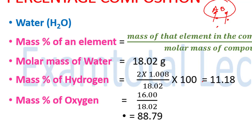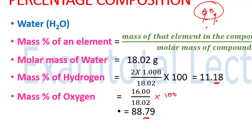Then we have the mass percentage of oxygen. It is 16.00 divided by 18.02, into 100, which comes out to be 88.79%. So in water, this is the percentage composition of different ingredients.